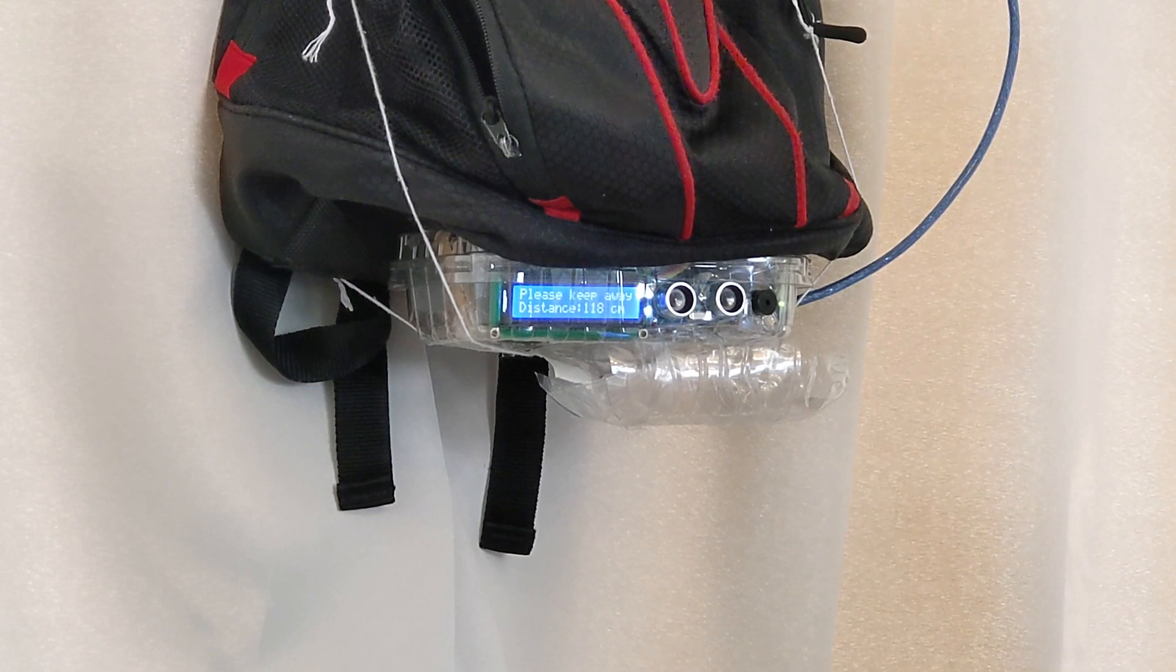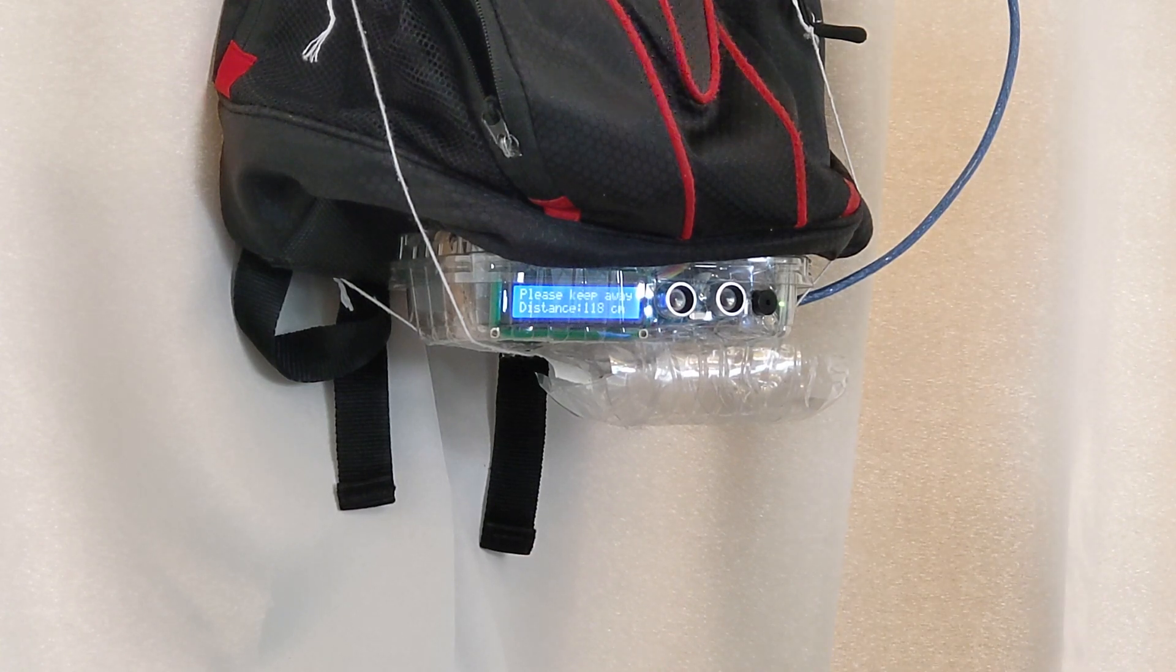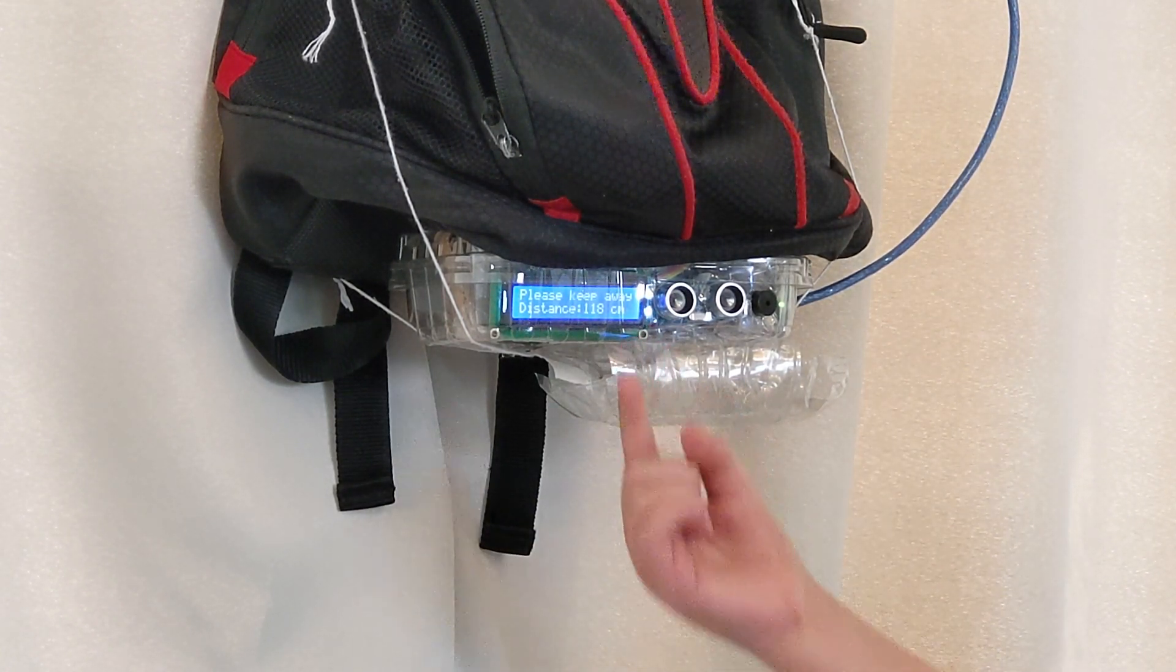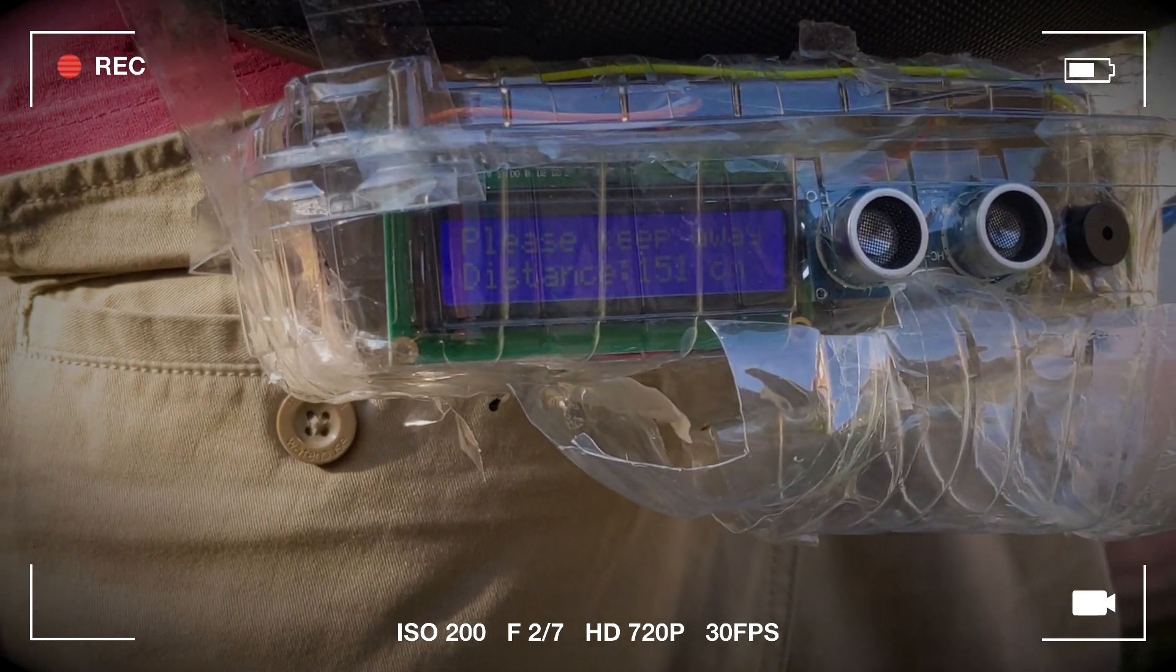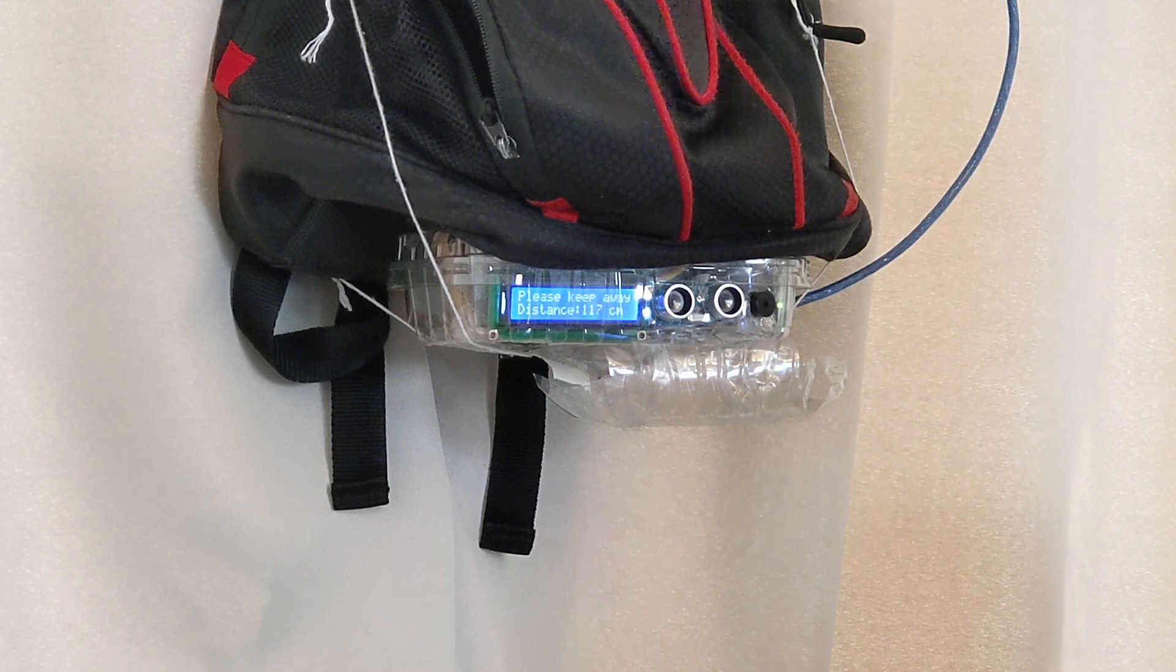If the distance is less than two meters, so if the person is closer than two meters but they're further away than one meter, the screen looks like this. If the backlight turns on, the LCD says please keep away. The distance is shown underneath.